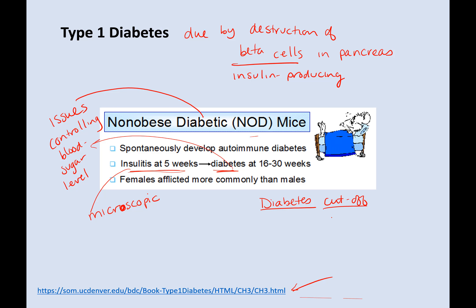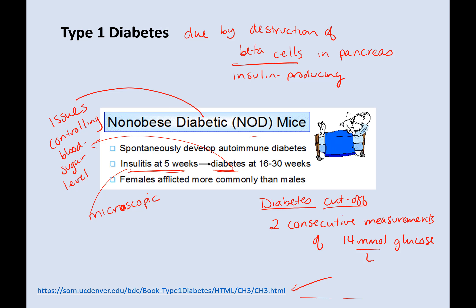What they're going to use as the diabetes cutoff to determine the mice have diabetes is that they're going to measure blood glucose levels weekly. Two consecutive measurements — two weeks in a row — of 14 millimoles per liter of glucose: if the mouse shows that level of glucose in the blood two weeks in a row, they're determined to have diabetes.